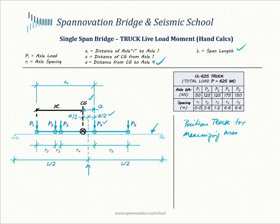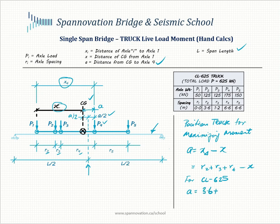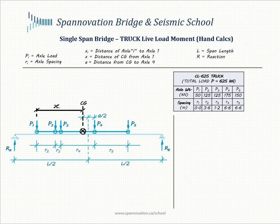Let's calculate parameter A. A equals the distance of axle P4 from axle P1, which is X4, minus X, the distance of the CG from the first axle. Expanding this: X4 equals R1 plus R2 plus R3 plus R4, so A equals R2 plus R3 plus R4 minus X. For CL625, doing the math, A equals 2.2 meters.